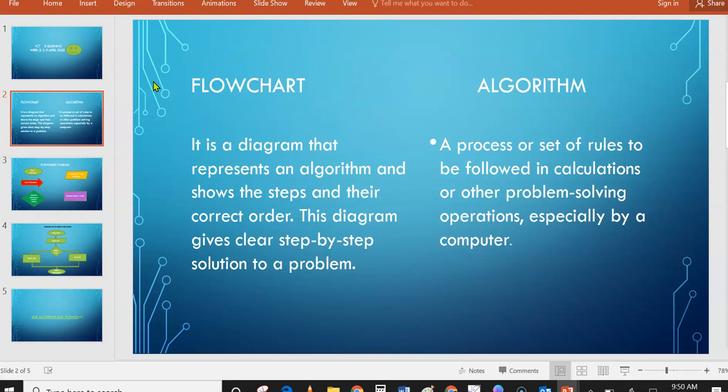So that is a flowchart - there is a diagram that I'm going to show you. On the other hand, an algorithm is a process or set of rules to be followed in calculations or other problem-solving operations, especially by a computer.